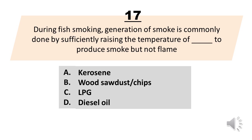During fish smoking, generation of smoke is commonly done by sufficiently raising the temperature of blank to produce smoke but not flame. A. Kerosene. B. Wood sawdust or chips. C. LPG. D. Diesel oil.